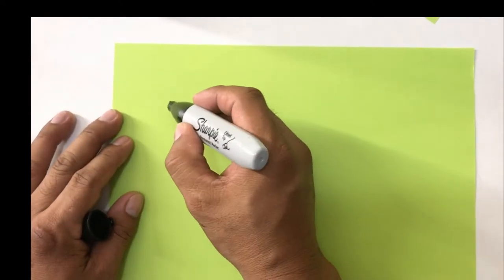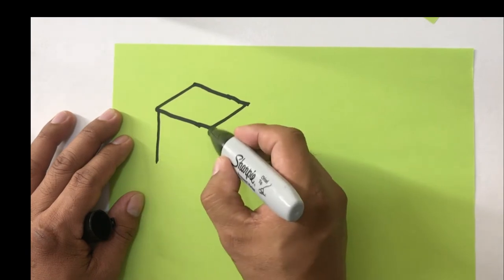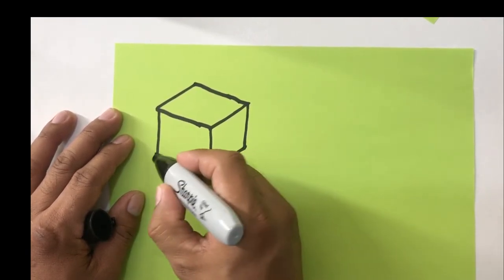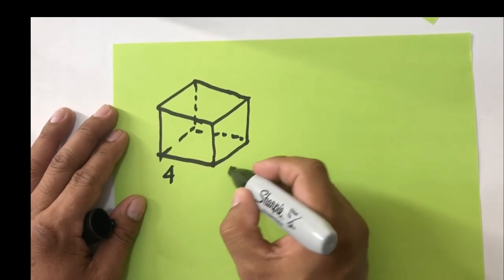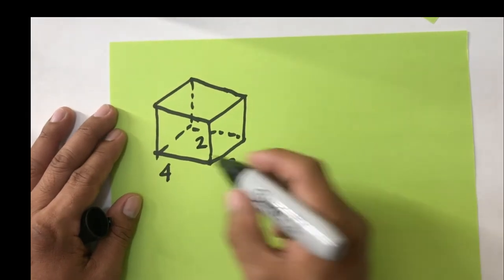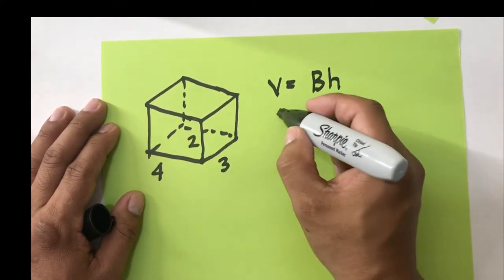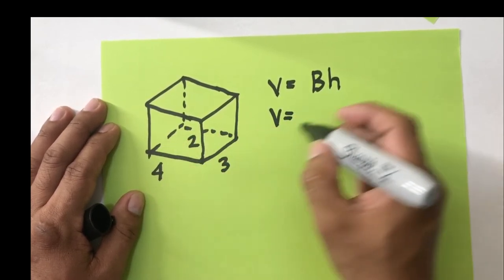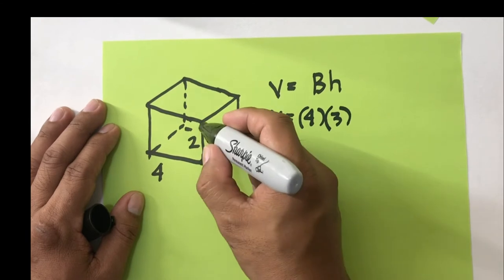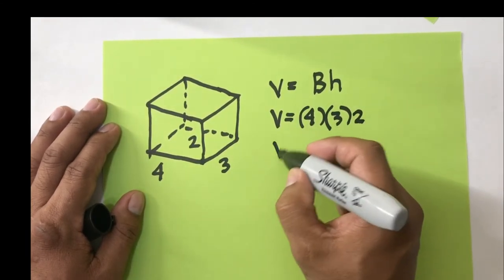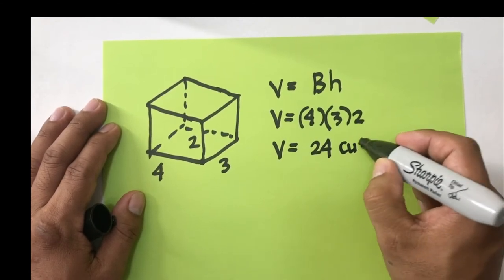Let's have an example. Let's say I have a rectangular prism where the length is 4 units, the width is 3 units, and the height is 2 units. The volume is equal to the area of the base times the height. The base is a rectangle, so the volume is length times width times height: 4 times 3 times 2. That gives us 4 times 3 equals 12, times 2 equals 24 cubic units.